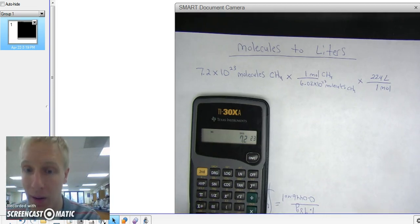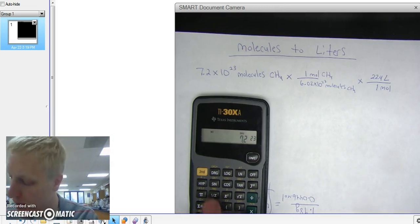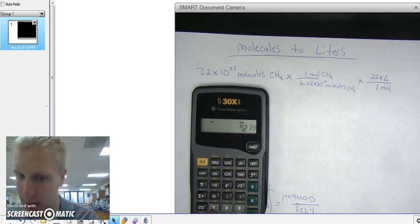And it's written as the EE button. And it's usually above the 7 on the calculator. There you go. There's the 7. There's the EE button.